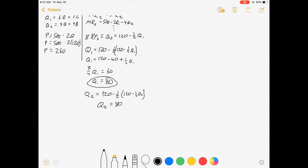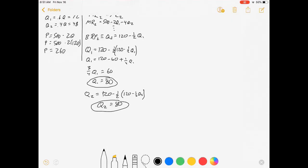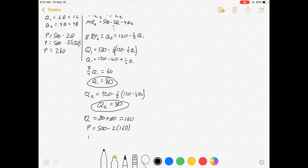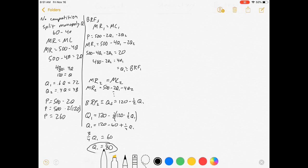So that means our market Q is 80 plus 80, which is 160. Our price is 500 minus 2 times 160, which is 500 minus 320, so price is 180. There's Cournot: we substitute our best response functions into each other and it all works out.